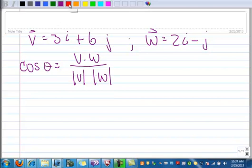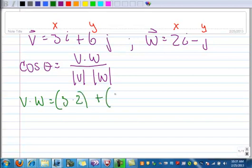Remember, this is the X part and the Y part. Let's calculate the dot product first. That's 3 times 2, add that to 6 times negative 1. When we do that, we get 6 and negative 6, and that's 0.